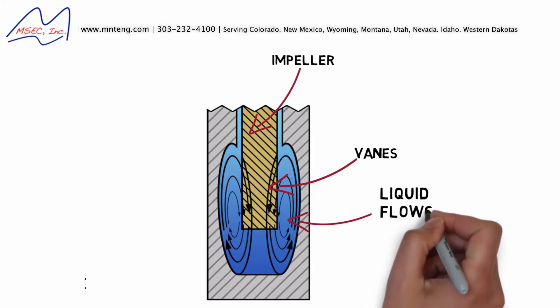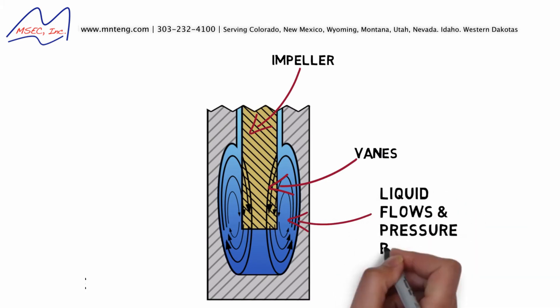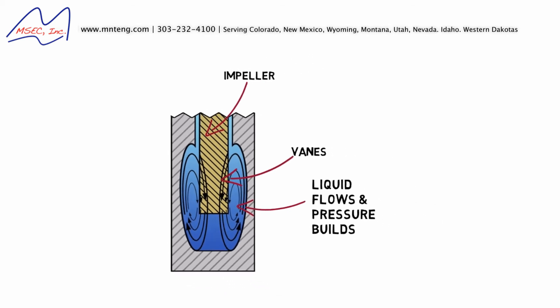Energy is added to the liquid in a number of impulses by the impeller's veins as it travels from suction to discharge, as the liquid builds pressure.